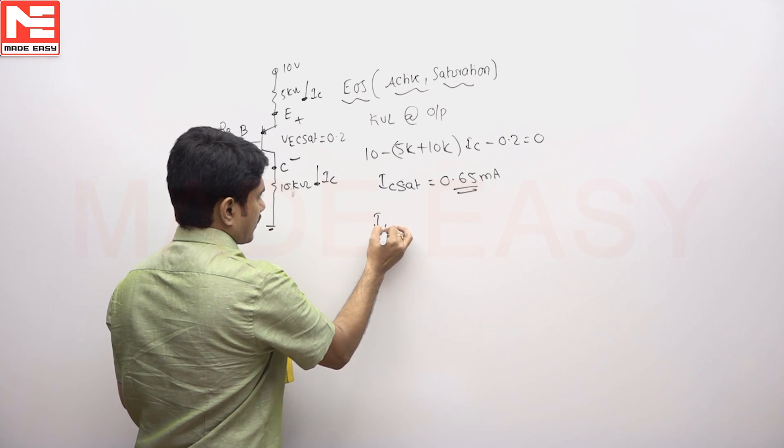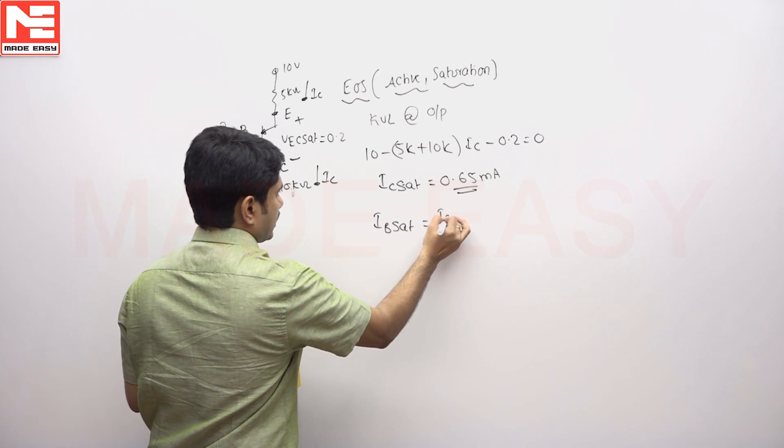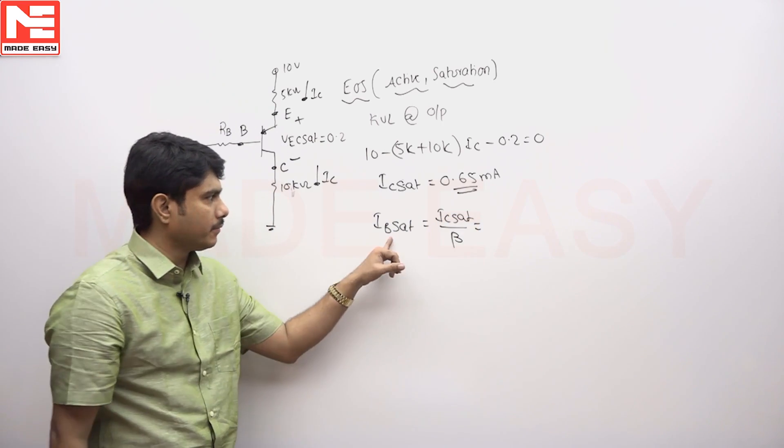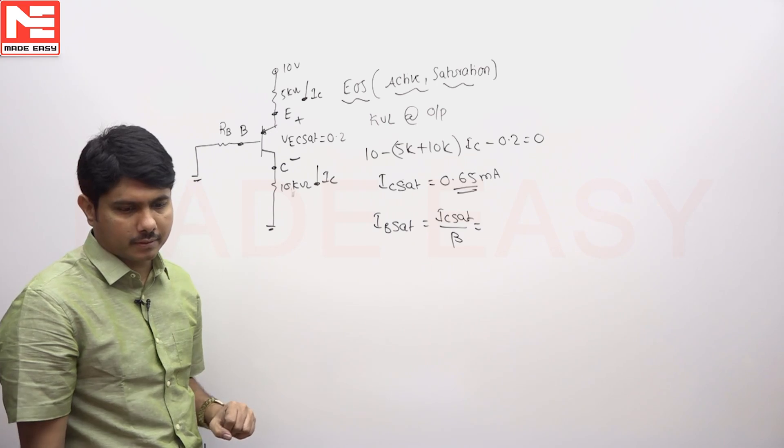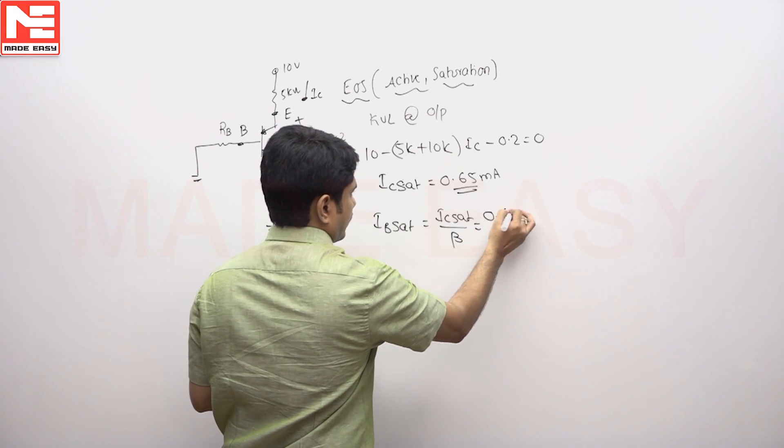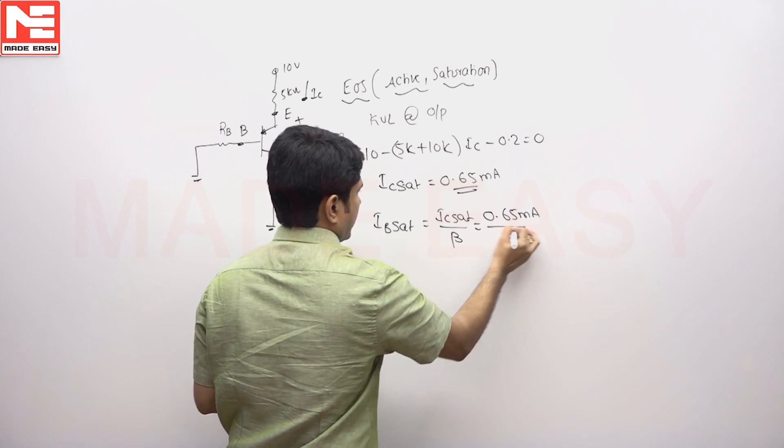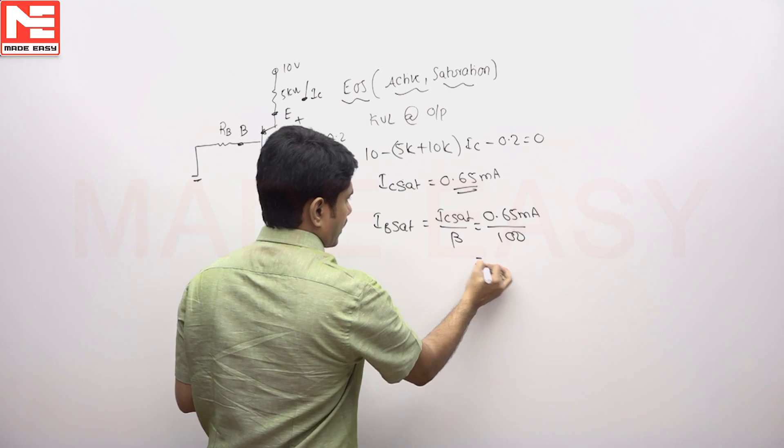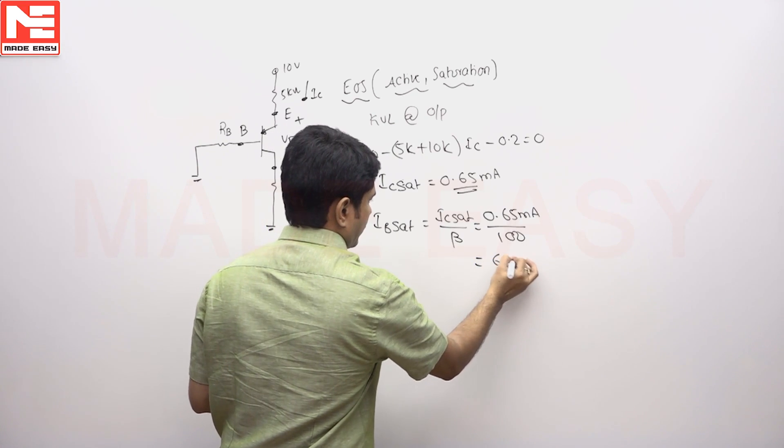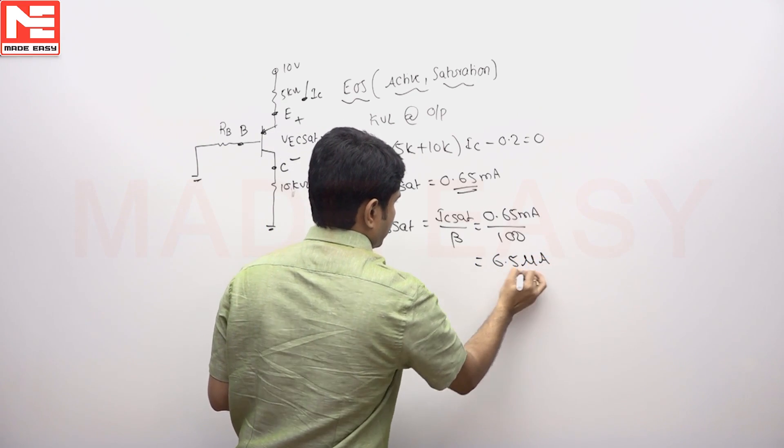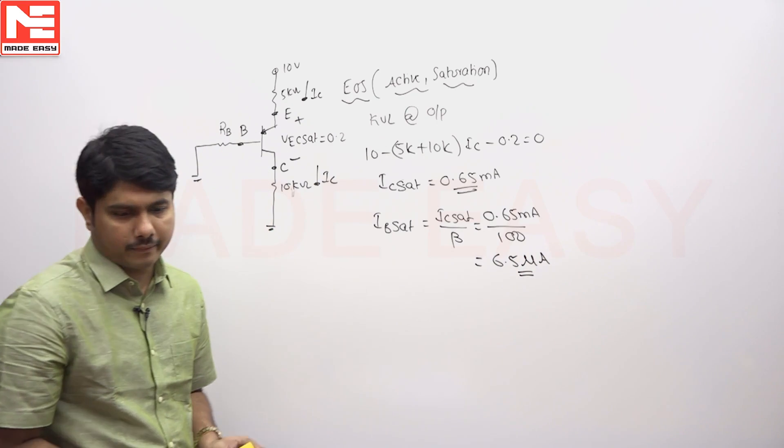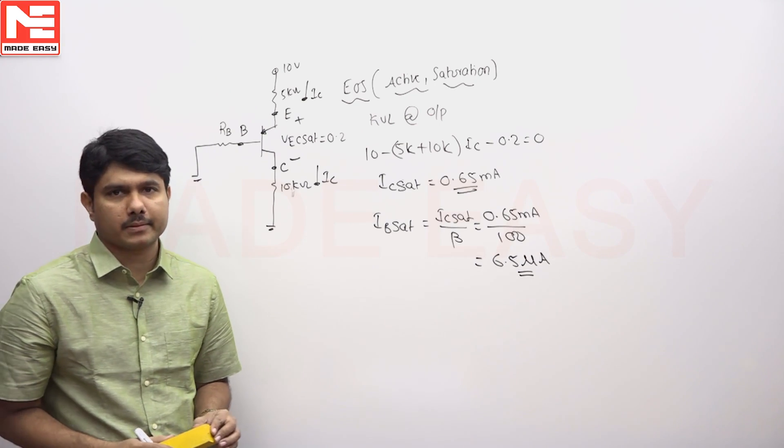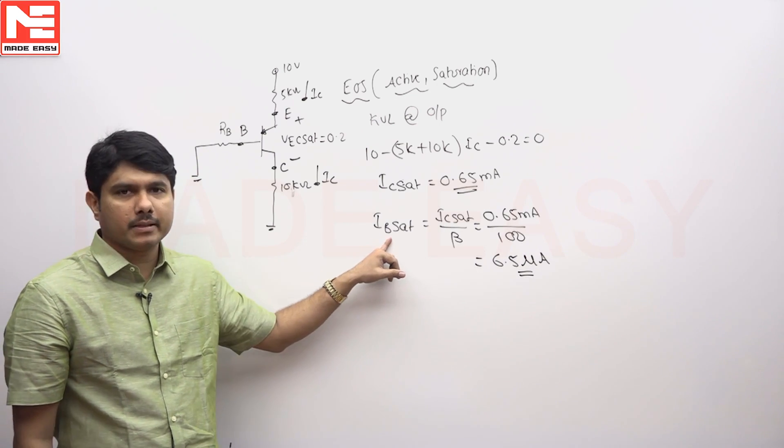So according to that IB sat if you want IC sat by beta this relation is valid because you are in the boundary condition. So the answer will be 0.65 milli amperes divided by beta is given as 100 for you. So this calculation if you do answer is coming 6.5 micro amperes, approximately 6.5 micro amperes. So this is called IB sat current.